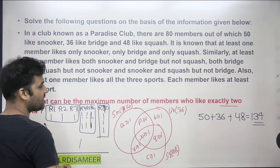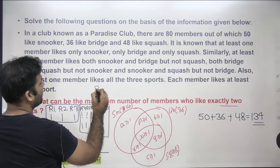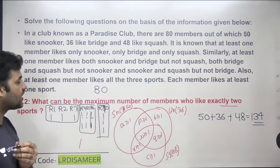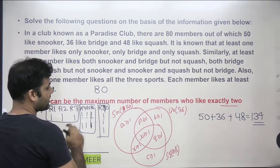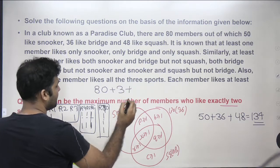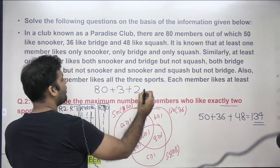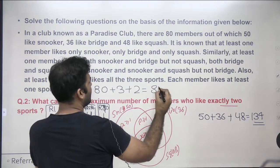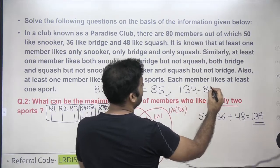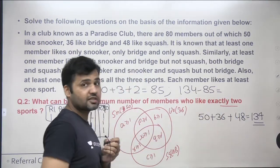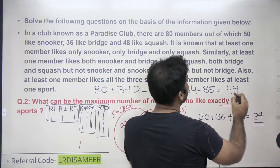Now let's count how many prizes have been utilized. I distributed 80 prizes first — one to everybody. Then three more prizes to roles four, five, and six for the pairwise regions, plus two more prizes to role seven for the triple-intersection region, totaling 85 prizes used. Out of 134, 85 have been utilized, leaving 49 prizes remaining.